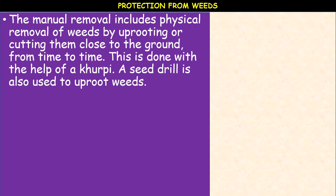Protection from the weeds: the manual removal and mechanical methods include the physical removal of weeds by uprooting or cutting them close to the ground from time to time. This is done with the help of an instrument called Kurfi. A seed drill is also used to uproot the weeds.